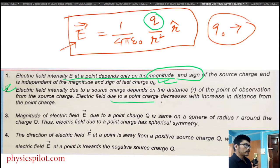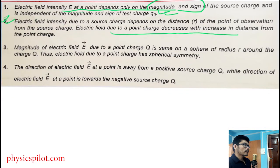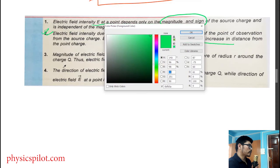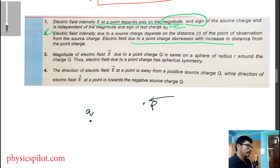The electric field due to a charge decreases with increase in distance. The magnitude of the electric field due to a point charge is the same on a sphere of radius r around the charge. The electric field due to a point charge has spherical symmetry.